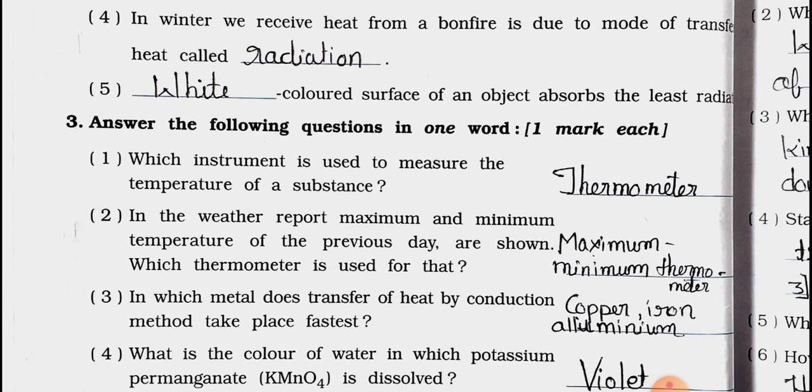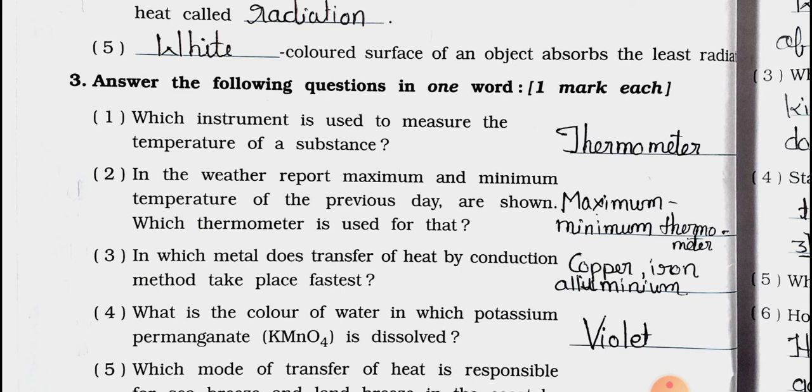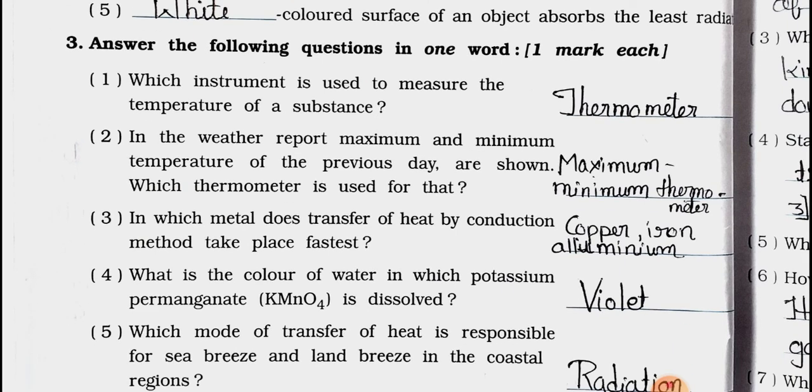Now see Main 3. Answer the following questions in one word. One mark each. Number 1: Which instrument is used to measure the temperature of a substance? Answer is thermometer. Thermometer is used to measure the temperature of a substance. Number 2: In the weather report, maximum and minimum temperature of the previous day are shown. Which thermometer is used for that? Answer is maximum-minimum thermometer.